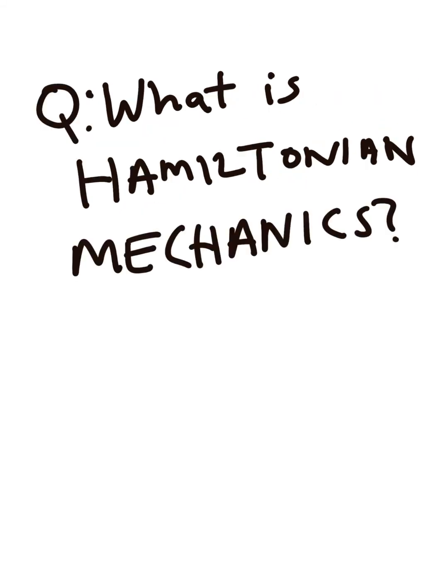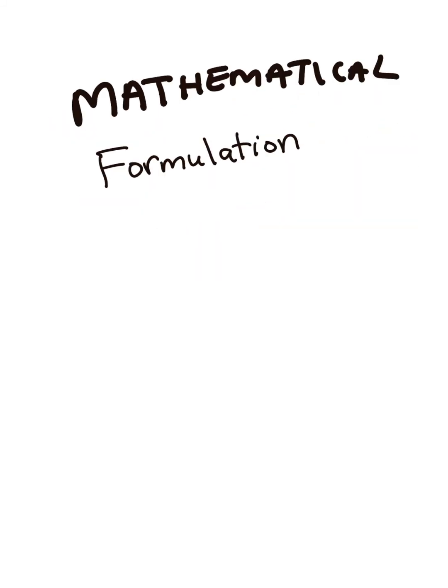So what is Hamiltonian mechanics? Hamiltonian mechanics is a mathematical formulation of classical mechanics that describes systems as points in what is called a phase space.